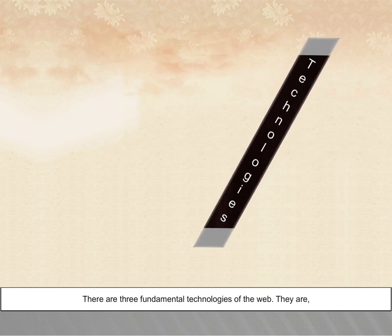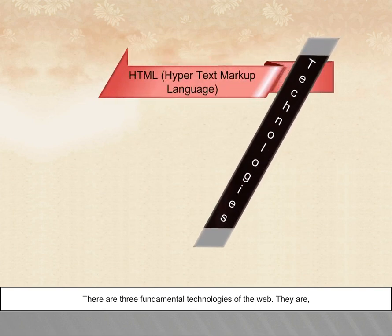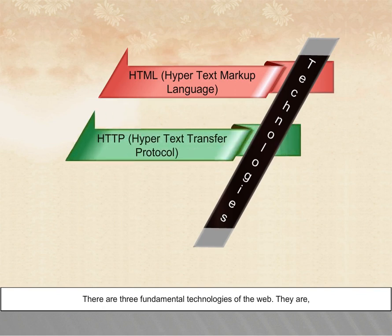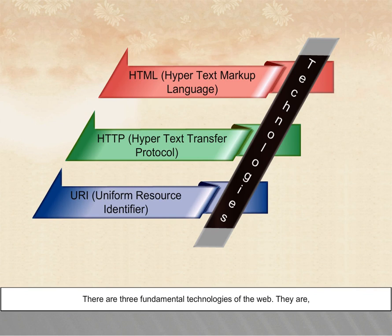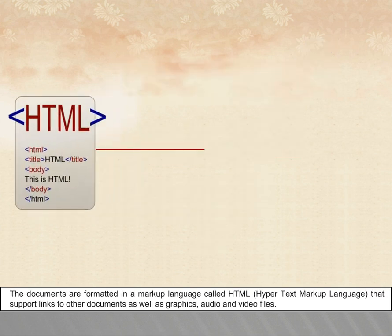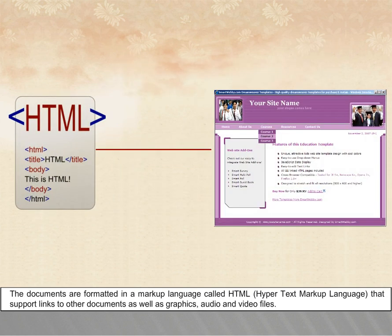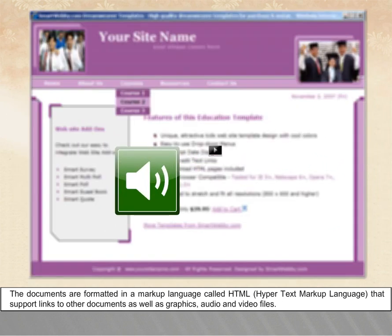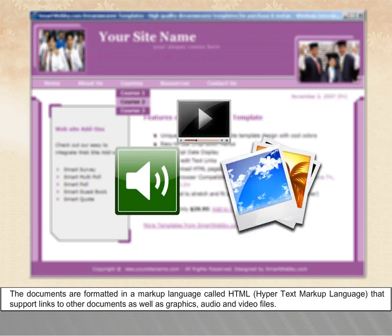There are three fundamental technologies of the Web. They are HTML (Hypertext Markup Language), HTTP (Hypertext Transfer Protocol), and URI (Uniform Resource Identifier). The documents are formatted in a markup language called HTML that supports links to other documents as well as graphics, audio, and video files.